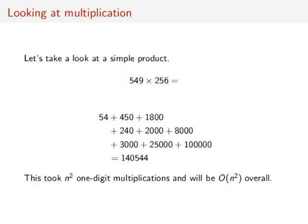If we assume that each of our inputs is roughly n digits in size, then this will take n² one-digit multiplications — one for each digit of the left number being multiplied by each digit of the right number. And addition won't add up too much more. So there'll be about big O of n² operations overall.